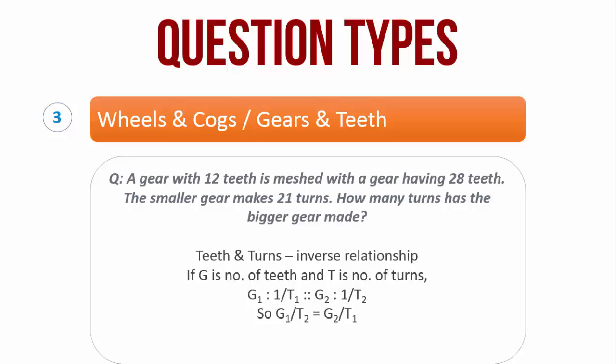Therefore, g1 by t2 is equal to g2 by t1. Here, g1 is 12, g2 is 28, t1 is 21 and t2 has to be calculated. So, 12 by t2 is equal to 28 by 21 or t2 is equal to 9.